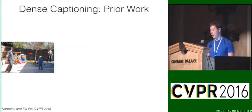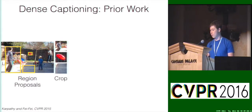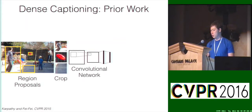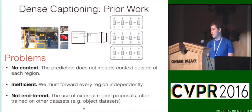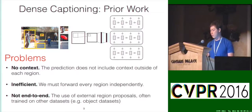Prior work on dense captioning by Karpathy and Fei-Fei has combined these two approaches into a simple pipeline: first use region proposals to select regions, crop and resize them, process them with a convolutional network, and for each of these regions pass to a recurrent network to generate region-level captions. This pipeline is relatively straightforward, but it has a couple of major problems. First, the generated captions don't have a lot of context in the image — for example, if we wanted to write a caption for a tight box of the man, that box is not enough context to know that he's throwing a frisbee. Second, this pipeline is inefficient, since each region must be processed independently by the convolutional network. Finally, this approach is not end-to-end, since it relies on an external method for generating region proposals. This is particularly bad for dense captioning, since sometimes we want to describe not only individual objects, but also regions encompassing multiple objects or background-stuffed regions in the scene.